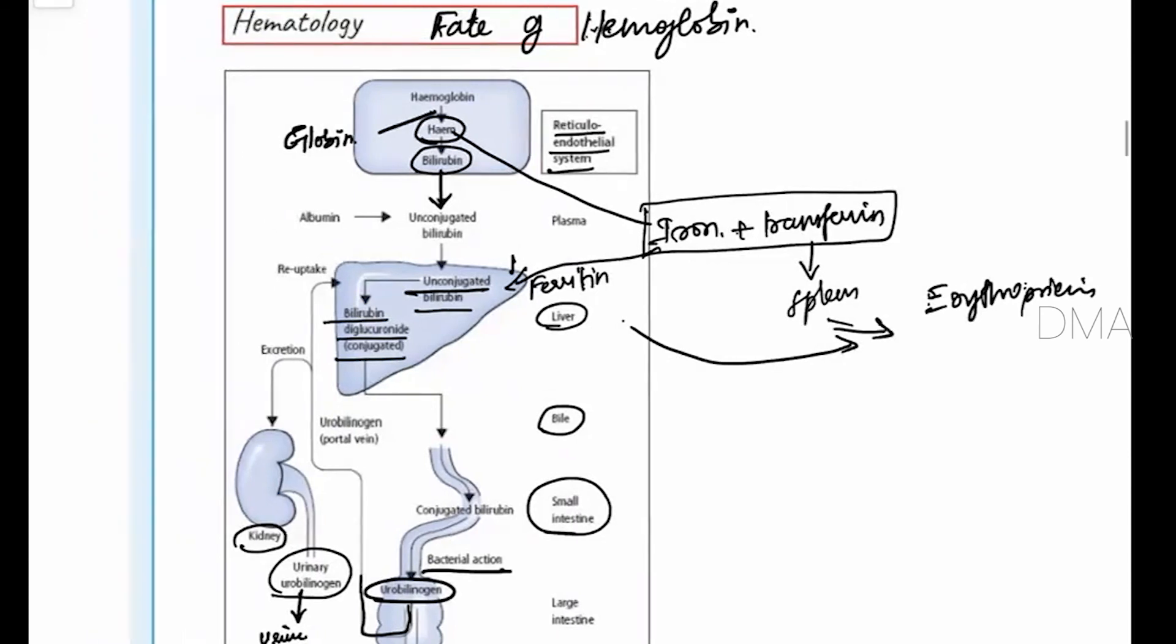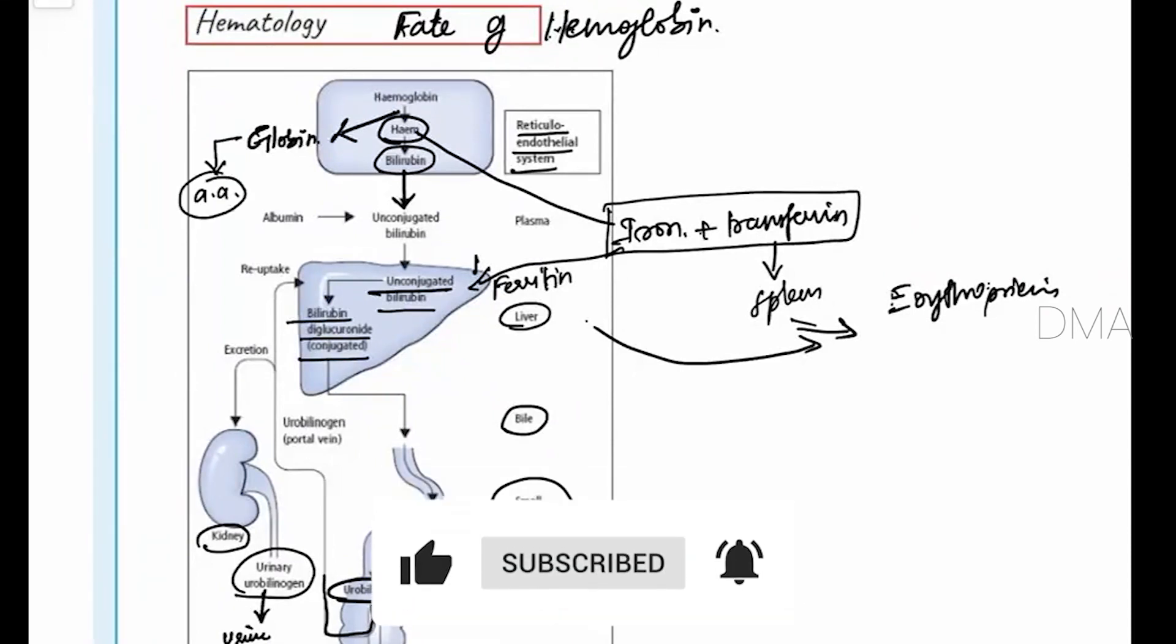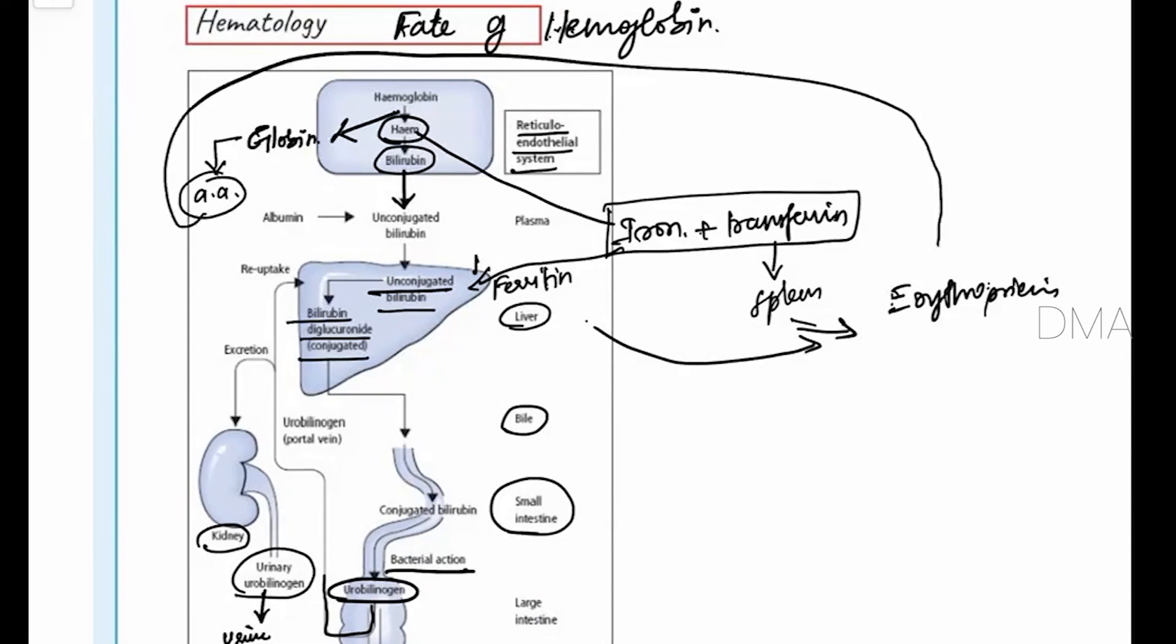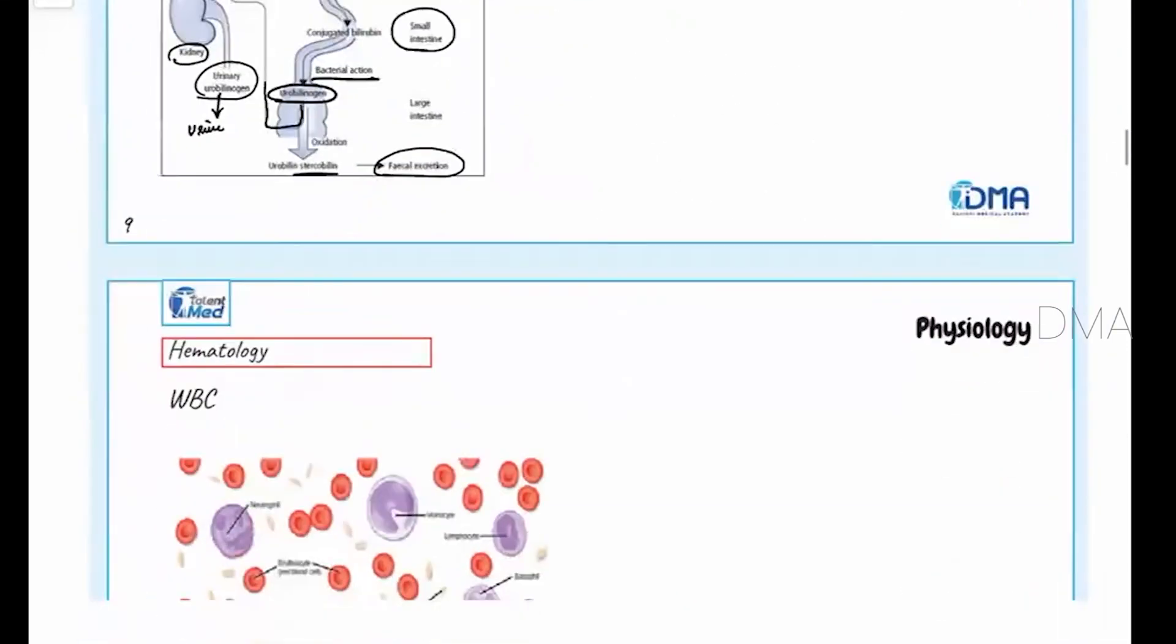So this is what is happening. And the globin which is being produced from the hemoglobin, it is an amino acid. So that will remain in the circulation. And that was also being utilized back during the next red blood cell formation and production. So this is what is happening to the hemoglobin after the 120 days lifespan of the RBCs. So clear everyone.